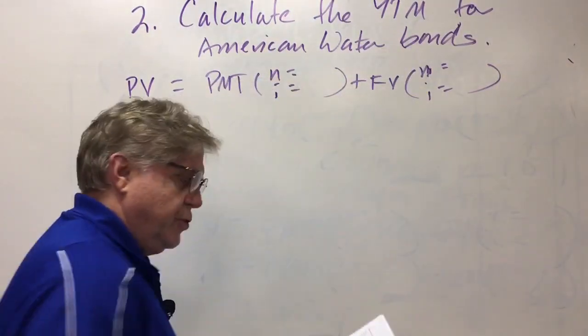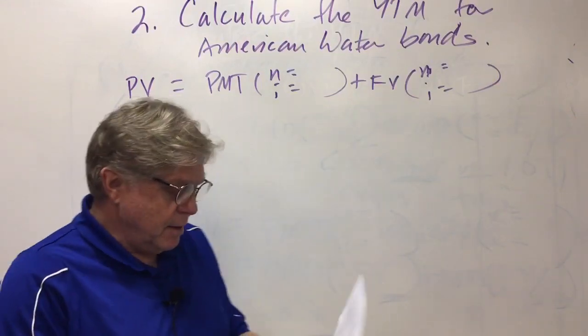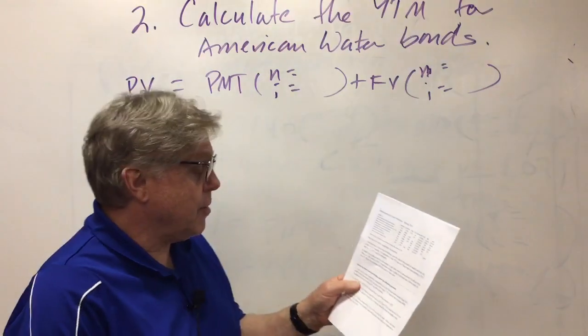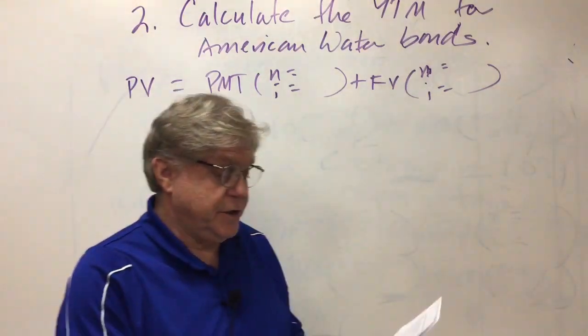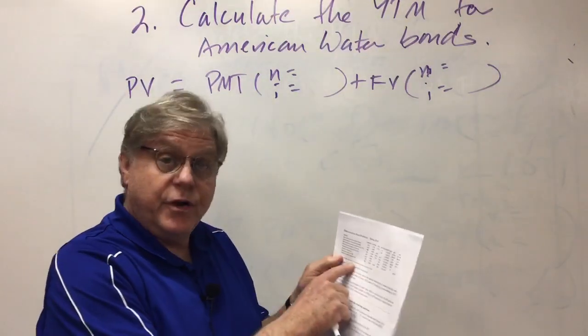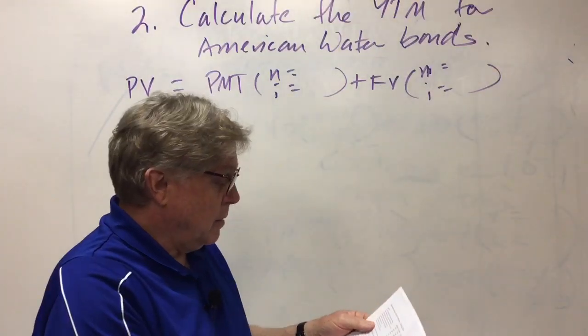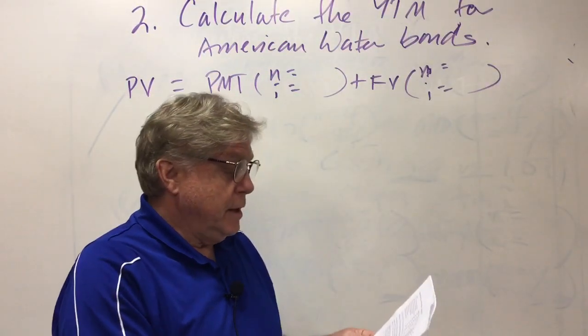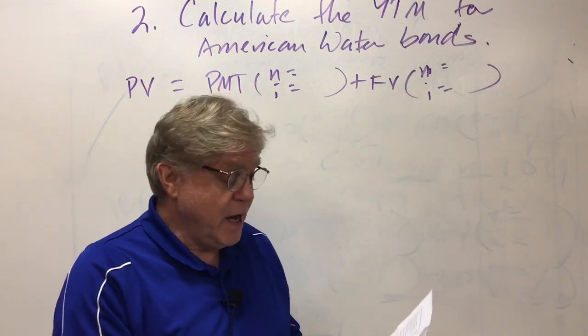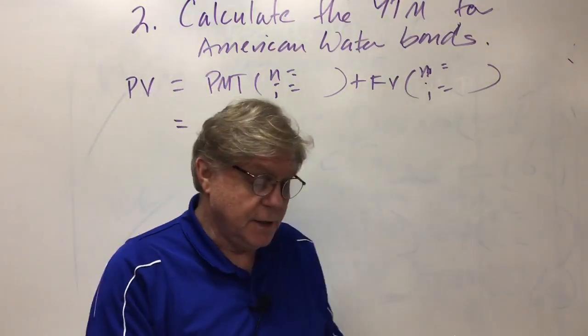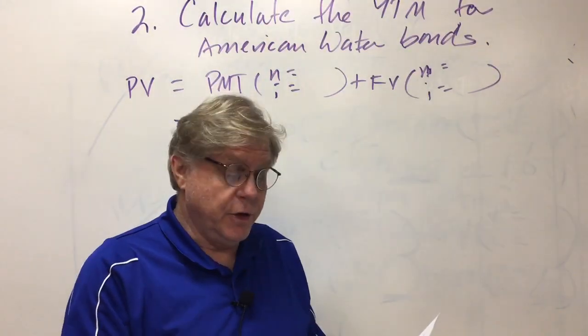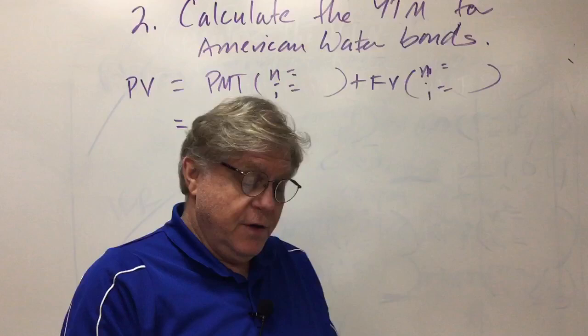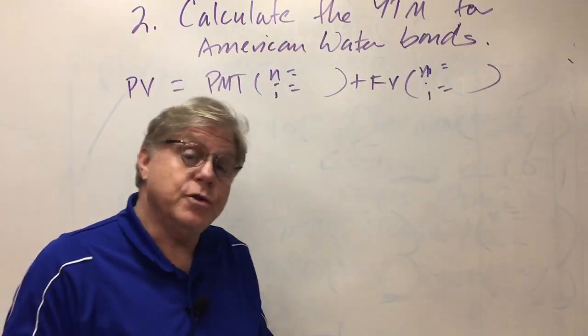Okay, let's move to number two on the demonstration bond problems. This one says calculate the yield to maturity for the American Water Capital bonds maturing in 2037. Those are at the bottom of the quotes you have here. American Water Capital Corporation has a coupon rate of 6.59 percent, yield of 3.69 percent, matures in 2037, and the ask price is 138.25.